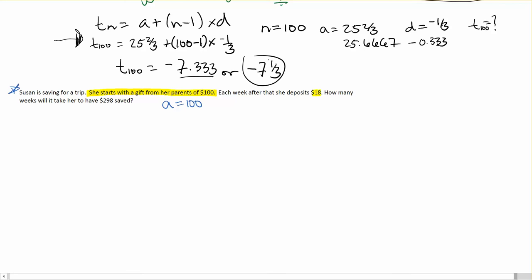Each week after that she deposits $18. So each week she puts in $18. That's going to be my D. My D here is equal to 18.